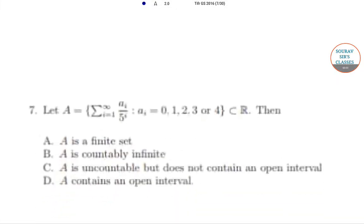Hello students, welcome to Saurabh Search Classes. The question is: Let A equal the summation i from 1 to infinity of a_i by 5 to the power i, where a_i equals 0, 1, 2, 3, or 4. Then option A: A is a finite set. Option B: A is countably infinite. Option C: A is uncountable but does not contain an open interval. And option D: A contains an open interval.